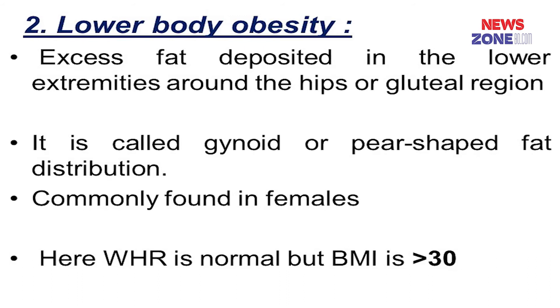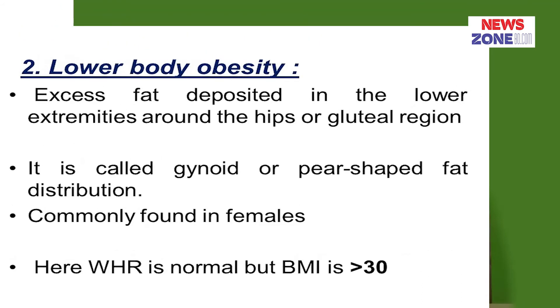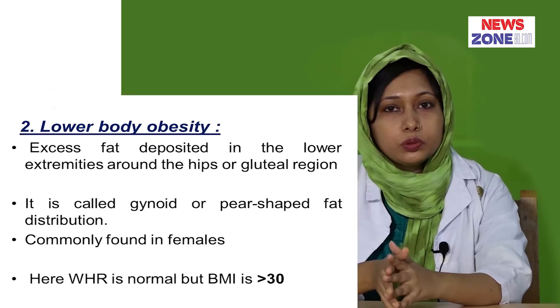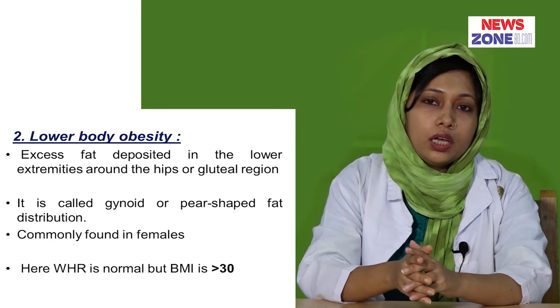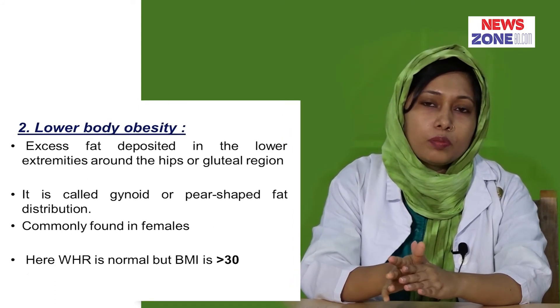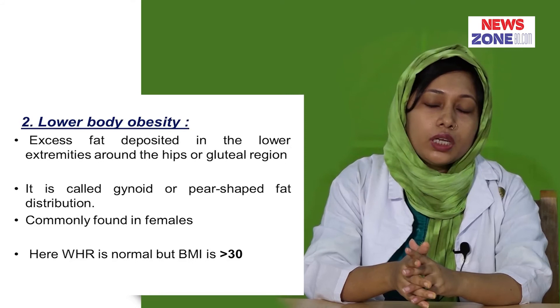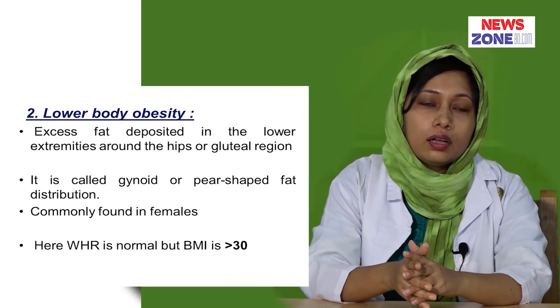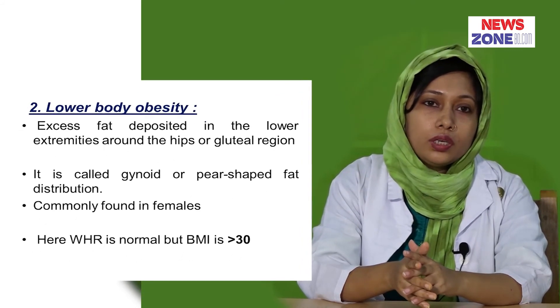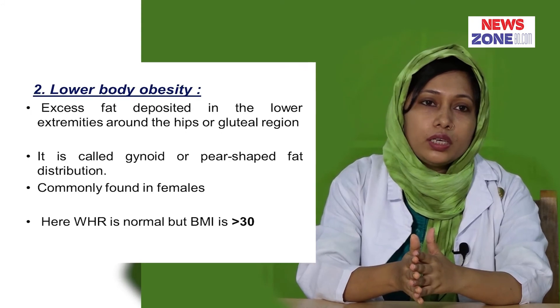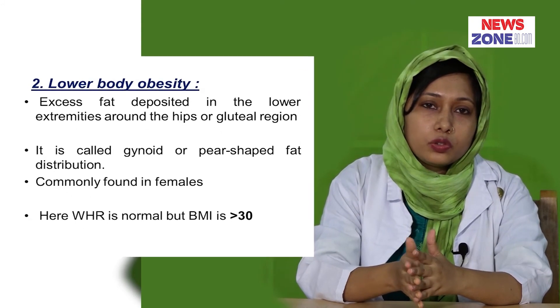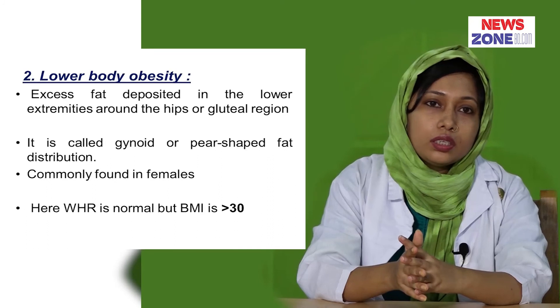Type 2, or lower body obesity, is also called pear-shaped or gynoid obesity. It is most commonly found in females. In this type, subcutaneous fat deposition is more prominent, and the metabolic and cardiovascular risk is less prominent. Fat is stored in the gluteal region, femoral region, and lower extremities.